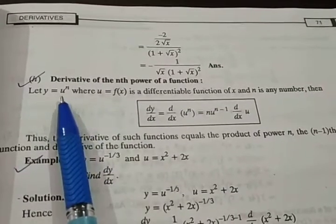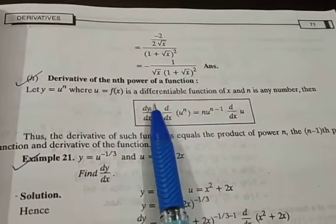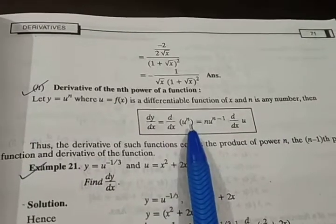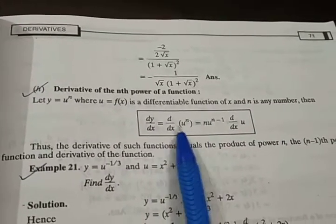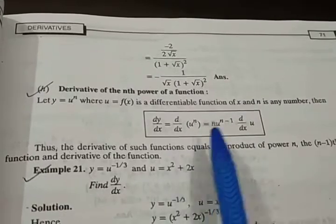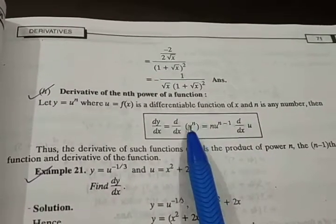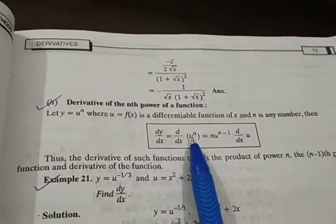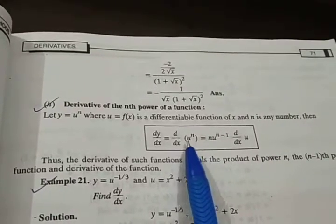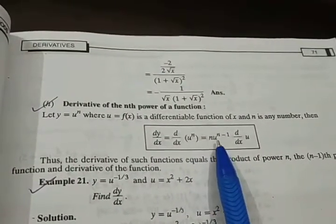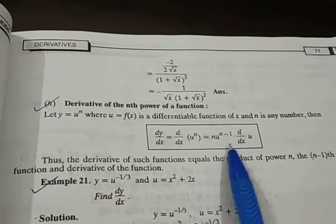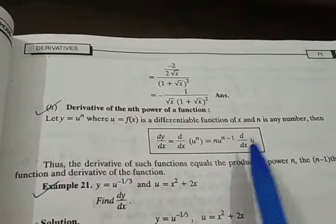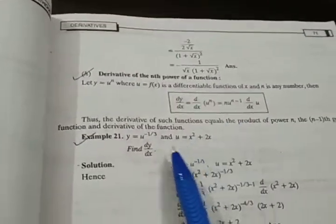y is equal to u raised to power n, where u is equal to function of x. So in this case, if we have our derivative calculation, dy by dx is equal to d by dx of u raised to power n. So we know that we have to power down, n into u raised to power n minus 1. This means that u is a big bracket in a form of a function. Not just x, but a larger function. So into u raised to power n minus 1 into derivative of the entire bracket, that is u, dy by dx of u.